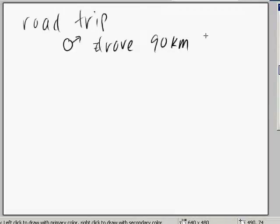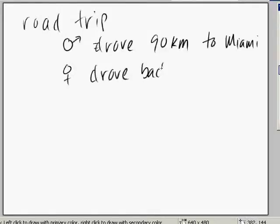And specifically, let's talk about a recent road trip. So let's say your brother drove at about 90 kilometers per hour to Miami, and your mom drove back at about 75 kilometers per hour to Tallahassee.